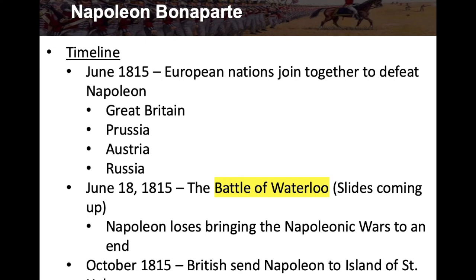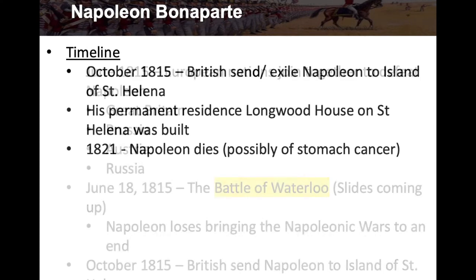Napoleon loses the Battle of Waterloo, bringing the Napoleonic Wars to an end. In October 1815, the British send Napoleon to the island of St. Helena, where his permanent residence at Longwood House was built for him. In 1821, Napoleon dies on St. Helena, possibly of stomach cancer.